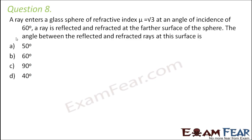A ray enters a glass sphere of refractive index mu equal to root 3 at an angle of incidence of 60 degrees. A ray is reflected and refracted at the further surface of the sphere. The angle between the reflected and refracted rays at this surface is?